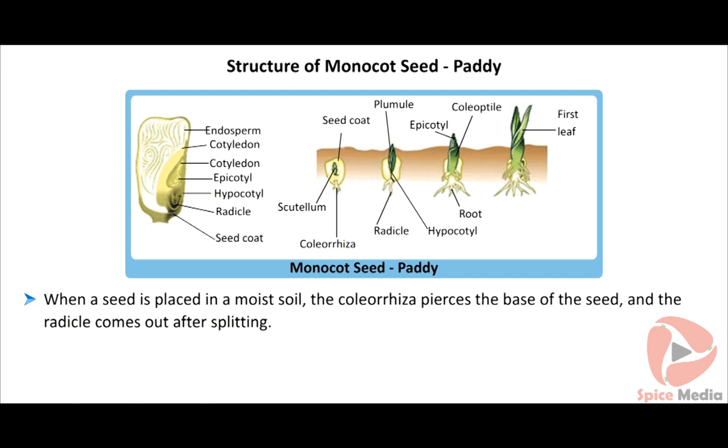When a paddy seed is placed in moist soil, the coleorhiza pierces the base of the seed, making way for the radicle that comes out after splitting.